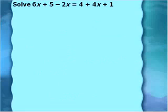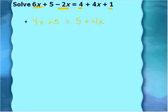Next: 6x plus 5 minus 2x equal to 4 plus 4x plus 1. This is very similar to the last problem. I'm going to combine like terms first. I'll combine 6x with minus 2x. Signs are very important here — pay attention to what sign is in front of the number, because that is the sign of the number. On the right, positive 4 and positive 1 combine to give me 5. So we have 4x plus 5 equal to 5 plus 4x. The left side is the same as the right.